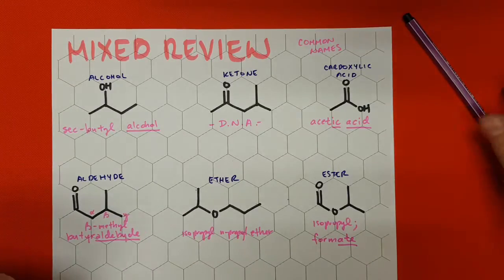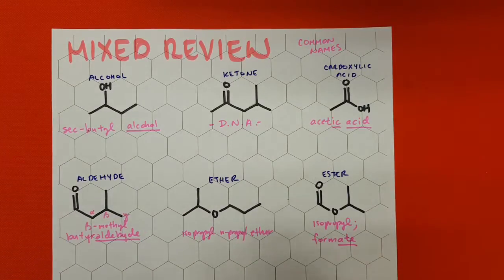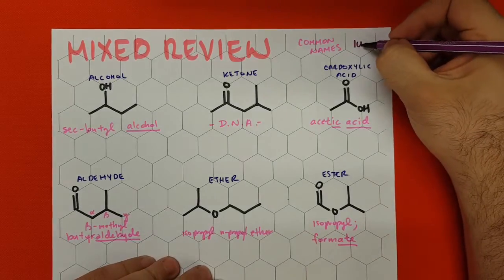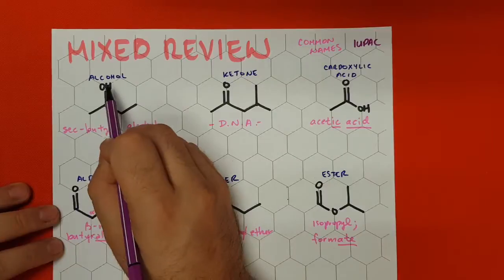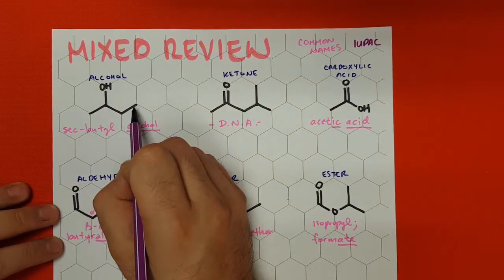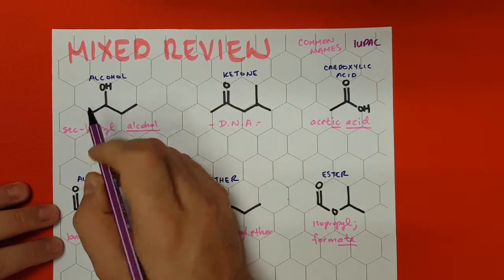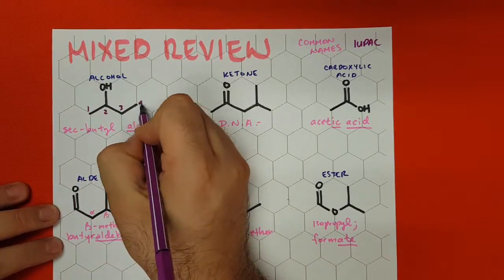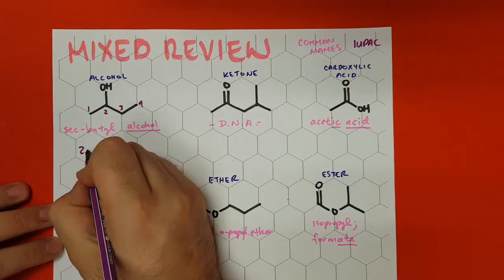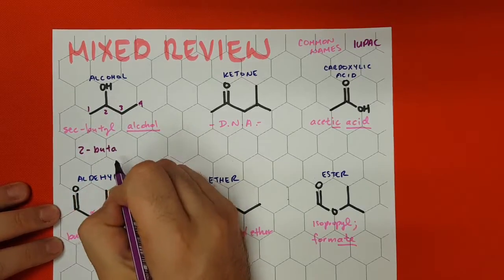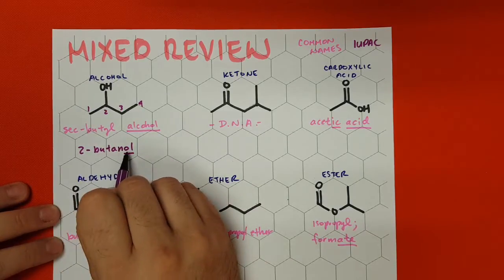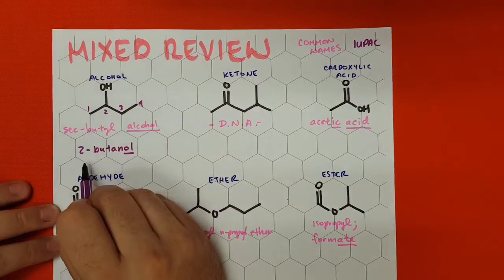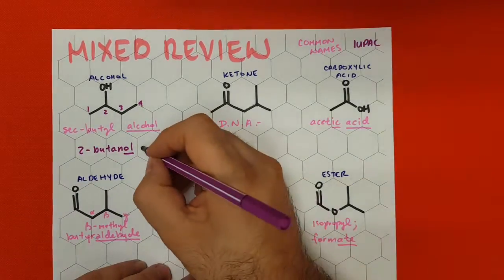Now, when we do the IUPAC nomenclature for these molecules — I'll write this down with another color marker — we go back to the same structure, counting and giving the functional group the lowest numbers. The functional group is OH. We have four carbons, and we want to start numbering from the end closest to the OH: one, two, three, four. This shows up as 2-butanol, indicating that the -ol, the hydroxy group, is at number two.